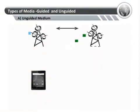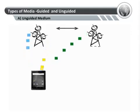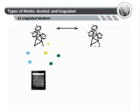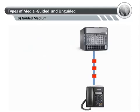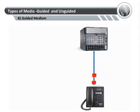Transmission media can be guided or unguided. An unguided medium, as the name suggests, is one where there is no physical connection between the source and the destination — that is, there is no cabling system that guides the signal. Wireless media are unguided. A guided medium consists of a physical connection between the source and destination points, where a cabling system guides the signal along a well-defined path. Wired media are guided.